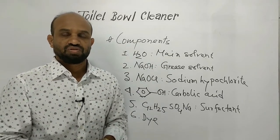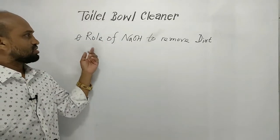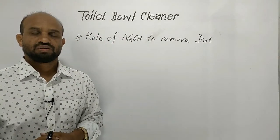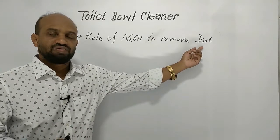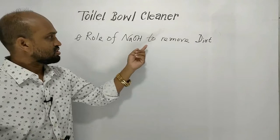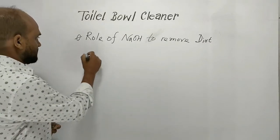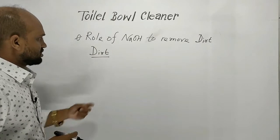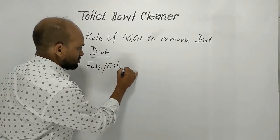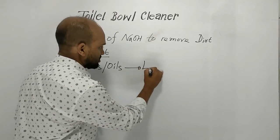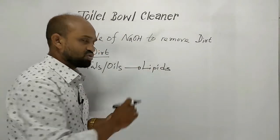Now let's see the role of different components in cleaning the toilet bowl and in killing germs. The role of sodium hydroxide is to remove dirt — to clean the toilet bowl. First we have to know what dirt is. Dirt is fats or oils, which are together called lipids, that are left from our body. This is actually dirt.